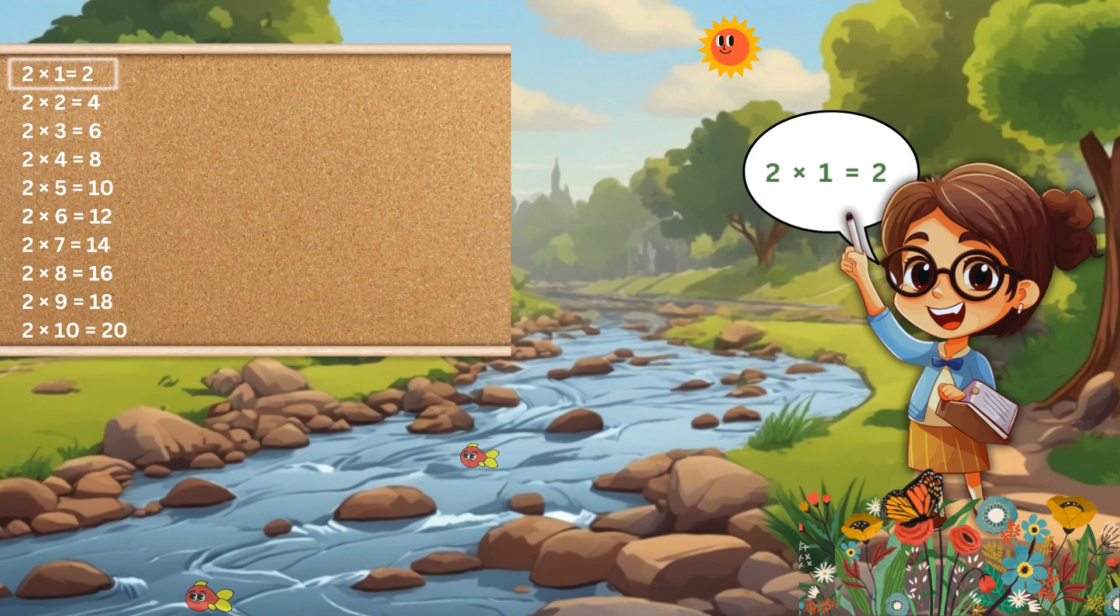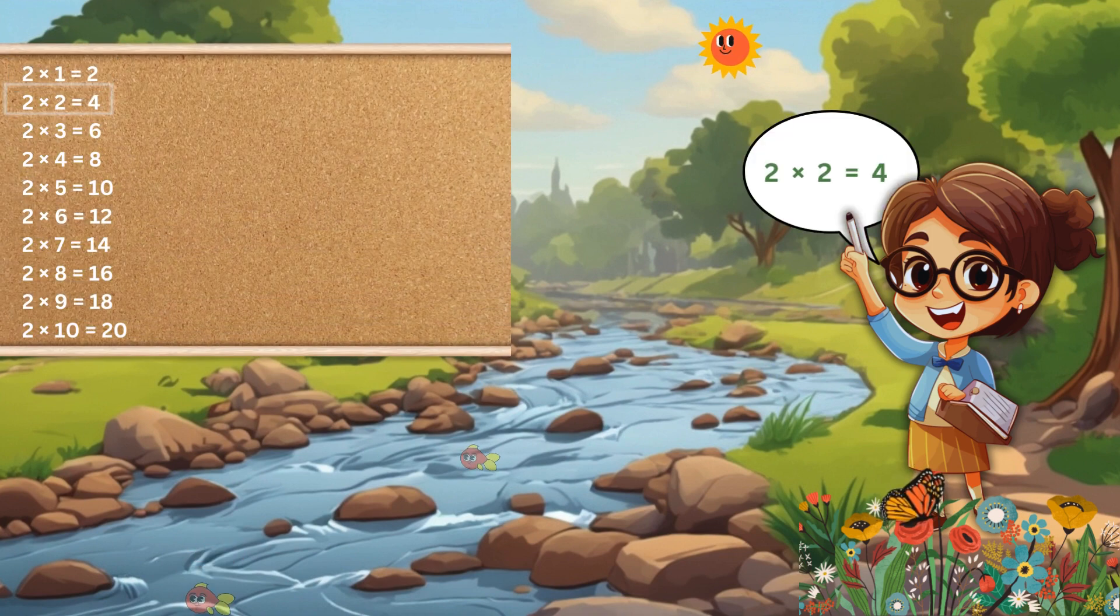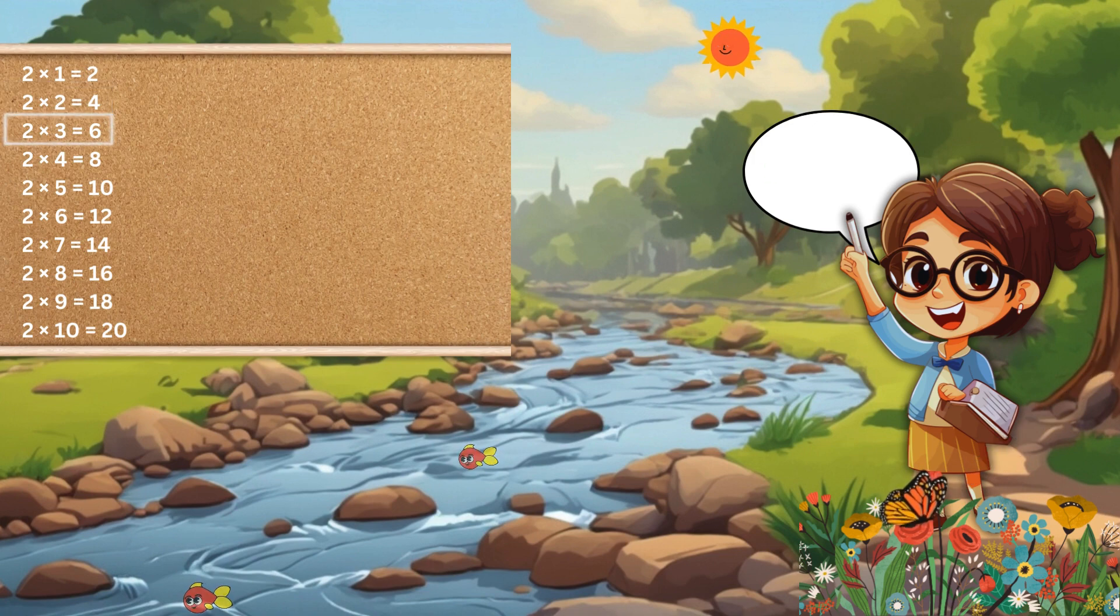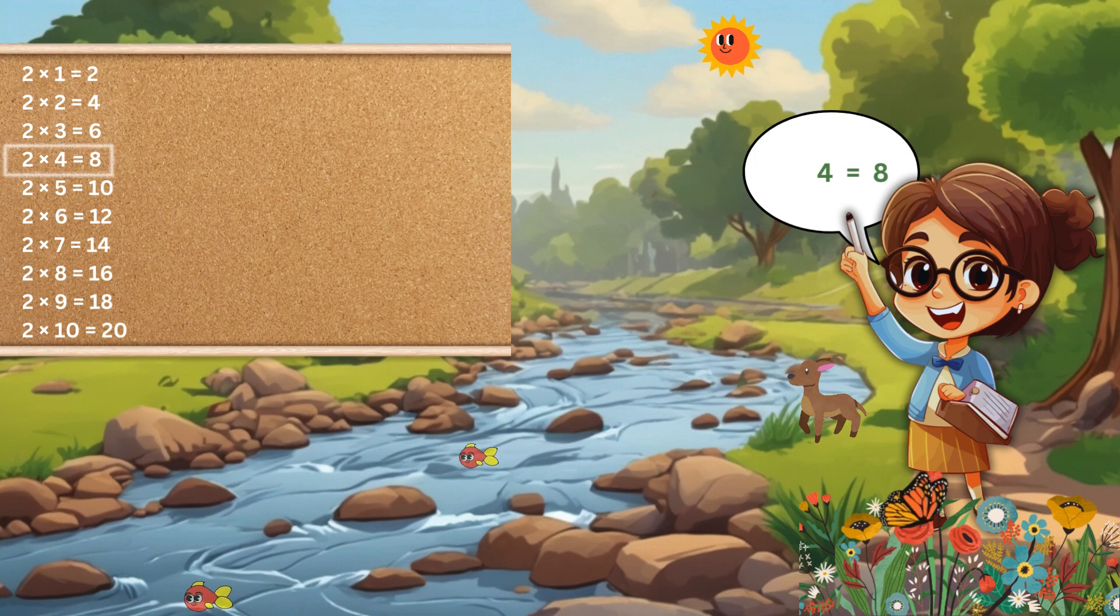Let's get started. 2 1s are 2, 2 2s are 4, 2 3s are 6, 2 4s are 8, 2 5s are 10.